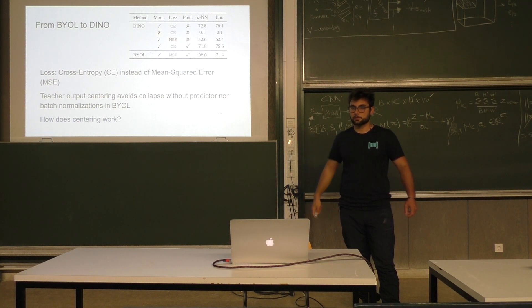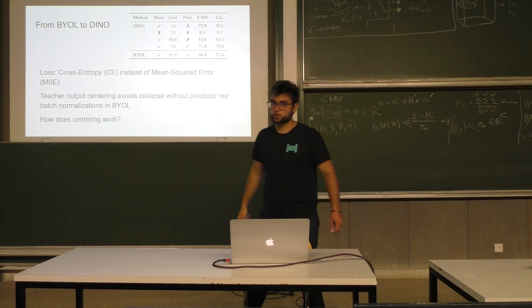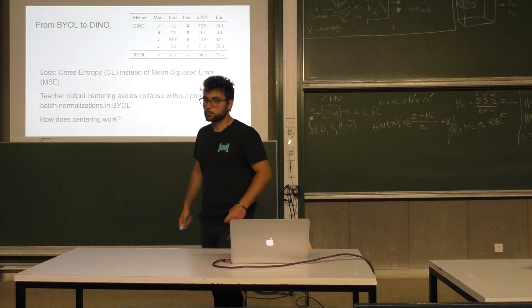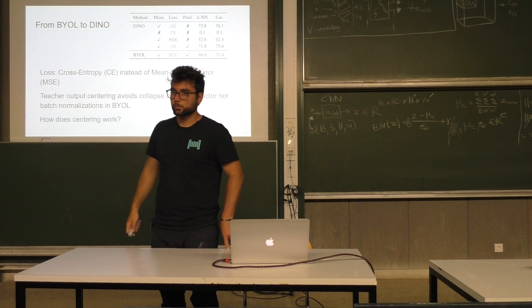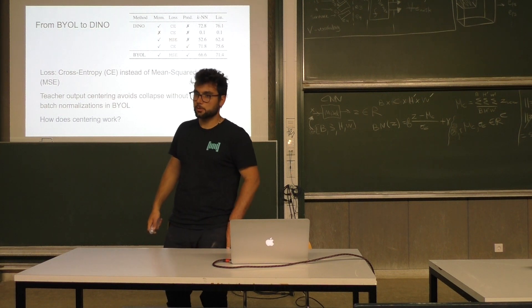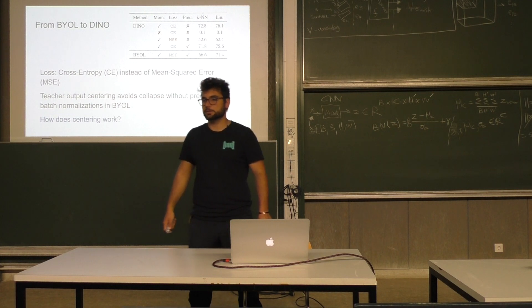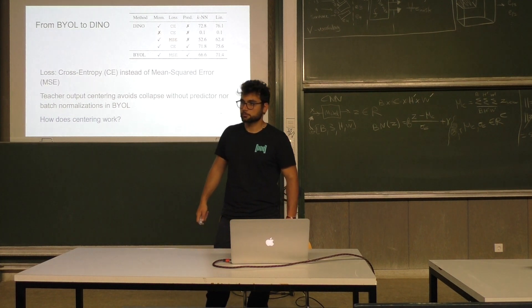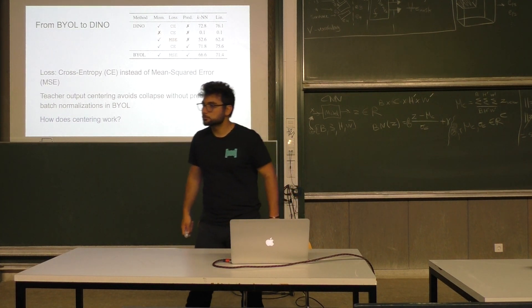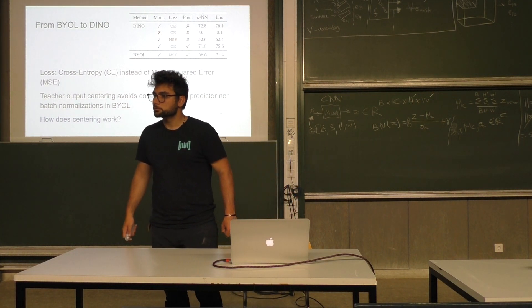If this doesn't rely on batch normalization, does that mean you can also use much smaller batches? Yes, here you can use much, much smaller batch sizes. What is the disadvantage of using batch normalization?